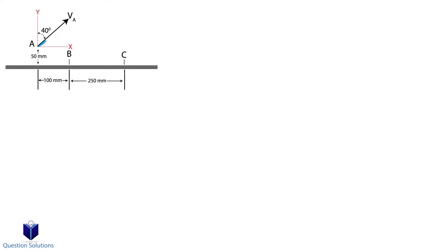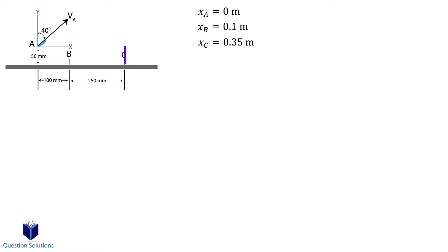In the horizontal direction, the starting location is at 0 meters. Point B is at 0.1 meters. Point C is at 0.35 meters. The velocity of the water is V sin 40 degrees.